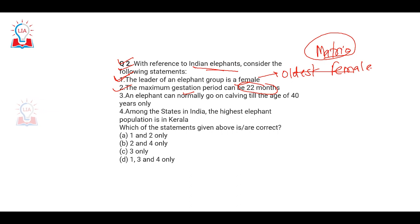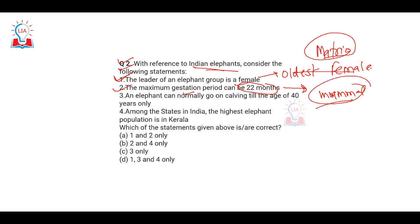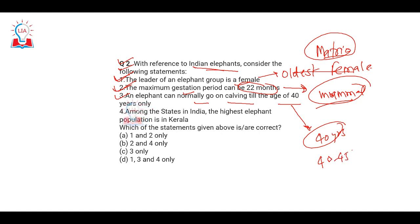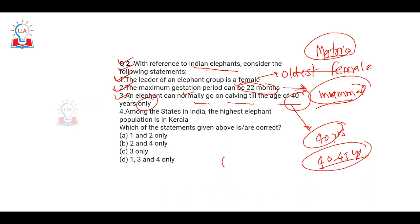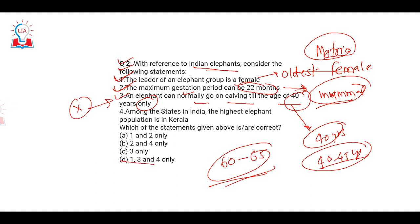Second statement: the maximum gestation period can be 22 months — yes, this is also correct. This is actually the longest gestation period for any mammal. Third statement: an elephant can normally give birth (calve) only till the age of 40 years. Normally it is 40 to 45 years, but there are instances of elephants giving birth even at age 60 or 65, so the 'only' in the statement makes it incorrect. We can eliminate the third statement.